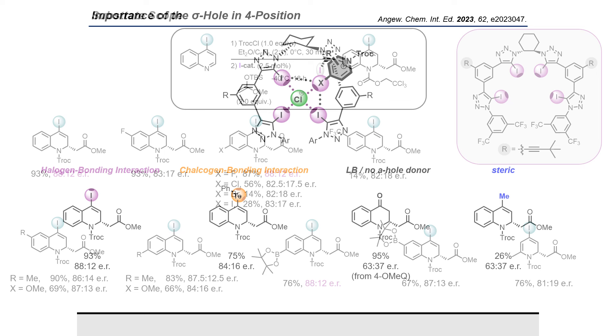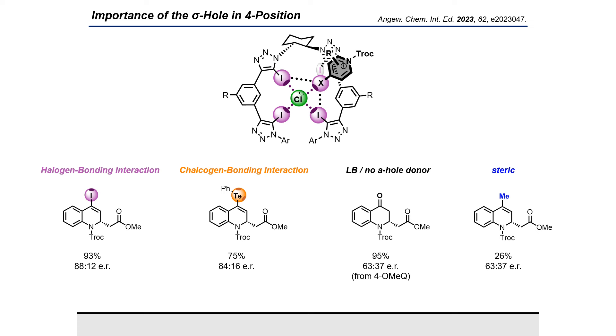To confirm the computational studies, we introduced a tellurium phenyl group at the four position of the quinoline core, because chalcogens can also bear sigma holes.